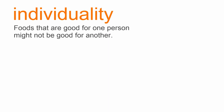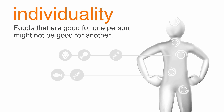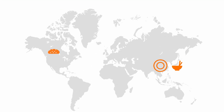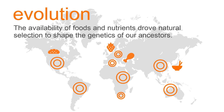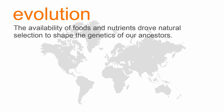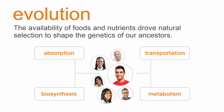However, foods that are good for one person might not be good for another. This difference is due to human metabolic individuality. Throughout human history, food and nutrient availability varied in different regions and time periods. This variability may have led to genetic mutation and adaptation, especially in genes responsible for nutrient absorption, biosynthesis, transportation, and metabolism.